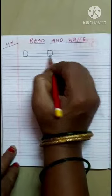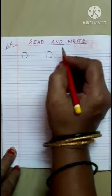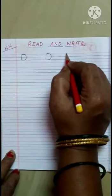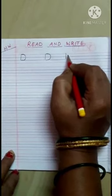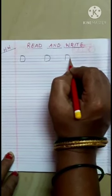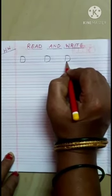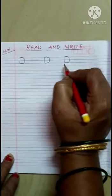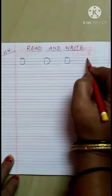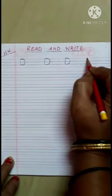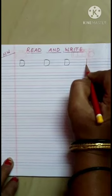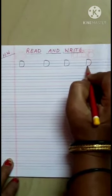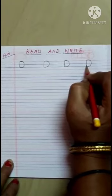Touch to the blue line. Alphabet D, D for dog — standing line and a big curve. Touch to the blue line. D, D for dog — standing line and a big curve. Touch to the blue line.